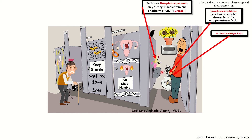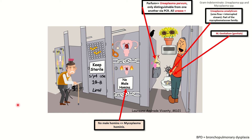All of these bugs are urease positive, as represented by the NH3 bottle. The 'no male hominis' sign on the bathroom door represents mycoplasma hominis. All of these bugs are part of the normal genital flora, and I will reiterate that the ureaplasma as well as mycoplasma hominis are all part of the mycoplasma modici family.